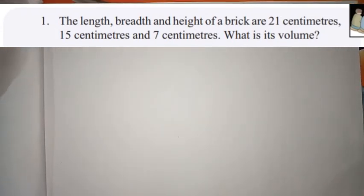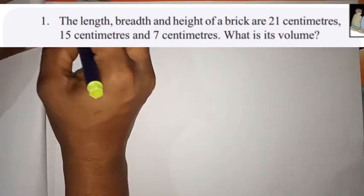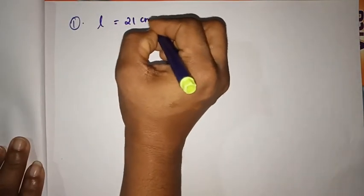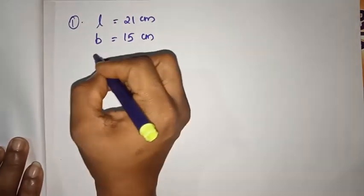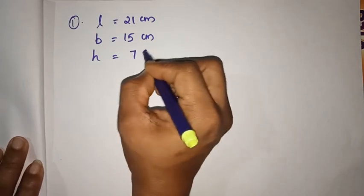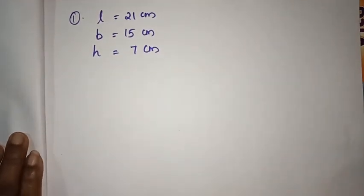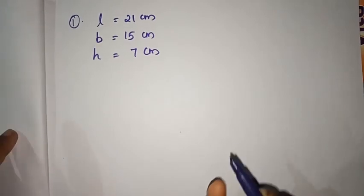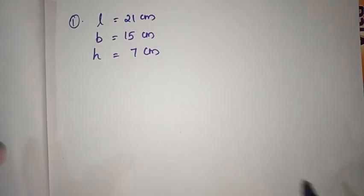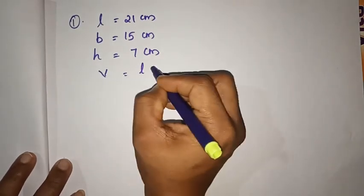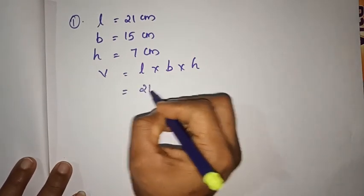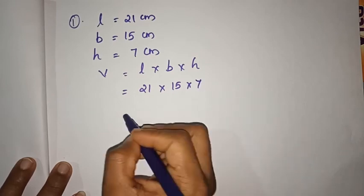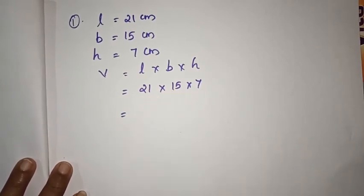We have a brick. The length is 21 cm, the breadth is 15 cm, and the height is 7 cm. Volume is equal to length × breadth × height, that is 21 × 15 × 7.